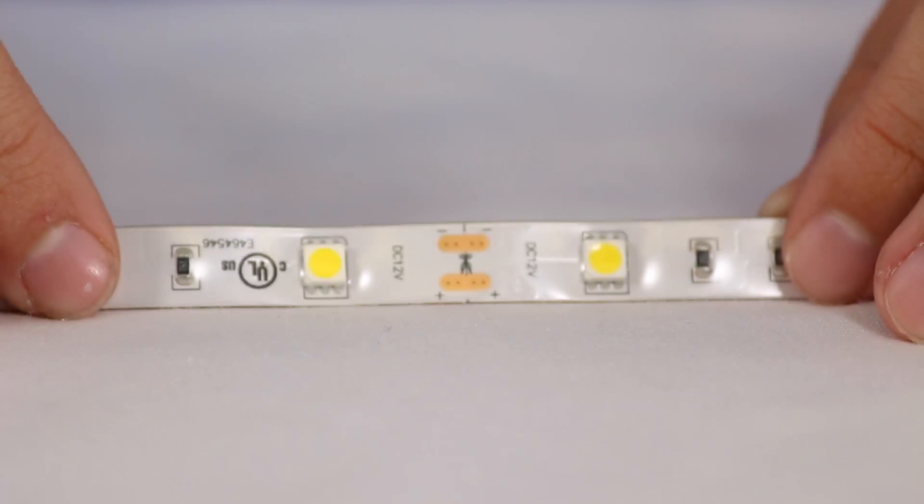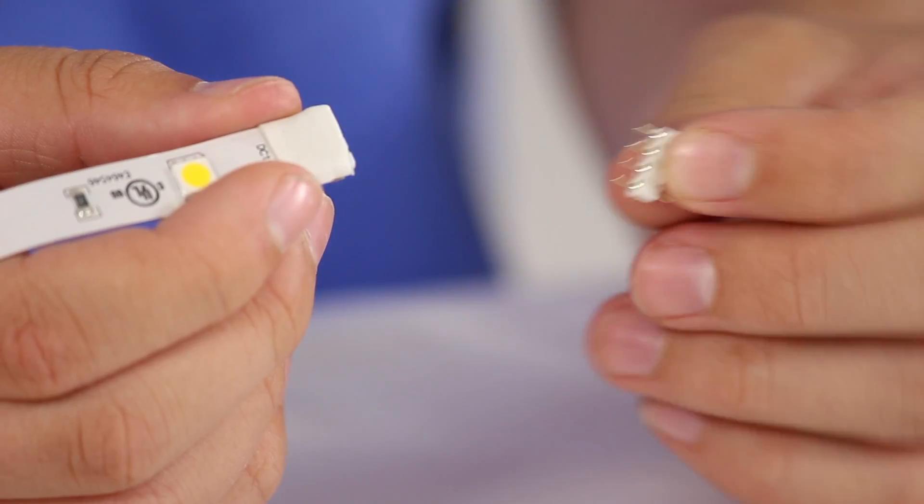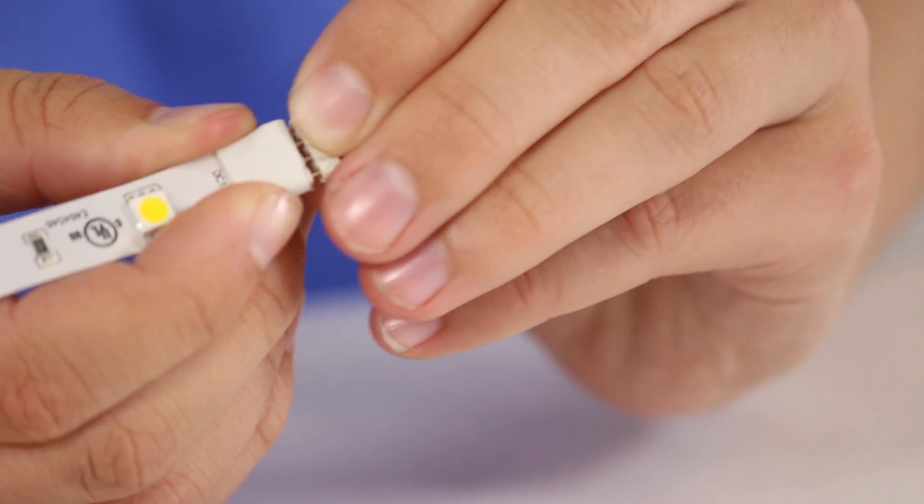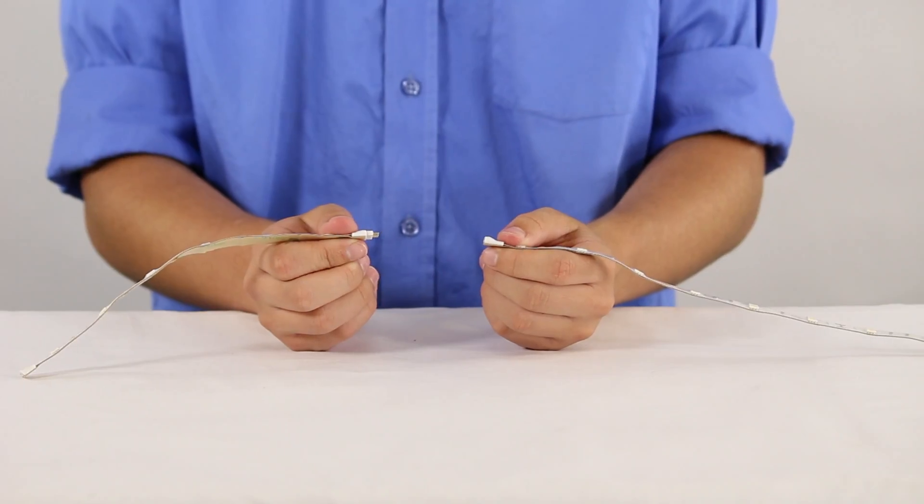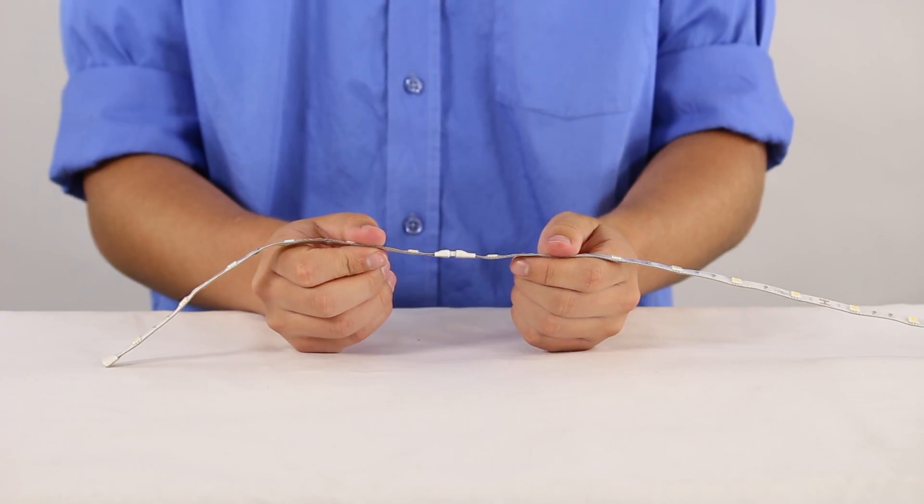You will notice that every three diodes there are two copper plates. One plate is labeled positive and the other negative. To connect two strips, simply insert a male-to-male adapter into the end. Making sure that you have the correct polarity, match the copper plates on your first strip with the copper plates on the second and insert.